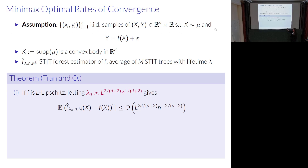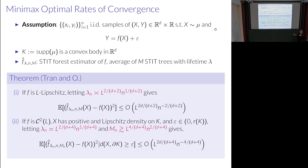Note that only the lifetime parameter is tuned here — there's no requirement on the number of trees. Even a single randomized decision tree achieves this optimal rate. But we see the advantage of averaging many trees in a second result: making the stronger assumption that f is twice differentiable, if we tune the lifetime parameter and ensure the number of trees grows fast enough with n, we get an improved upper bound and an improved rate of convergence.